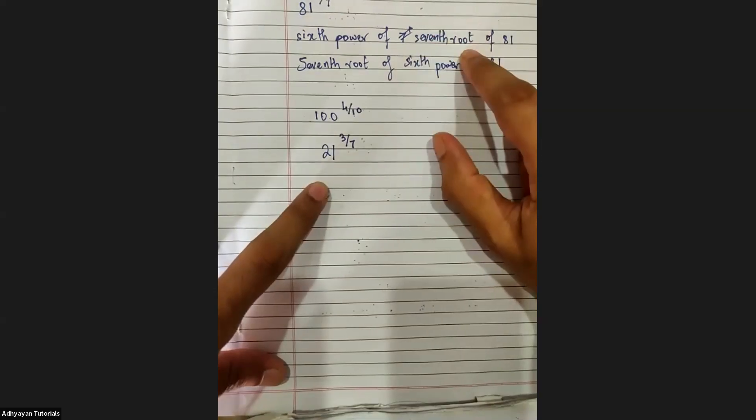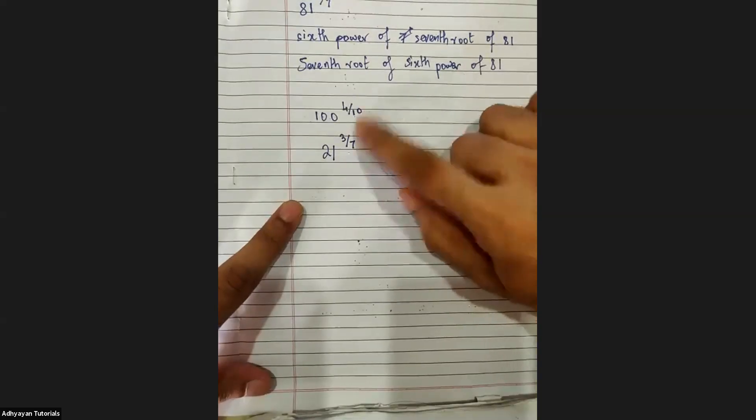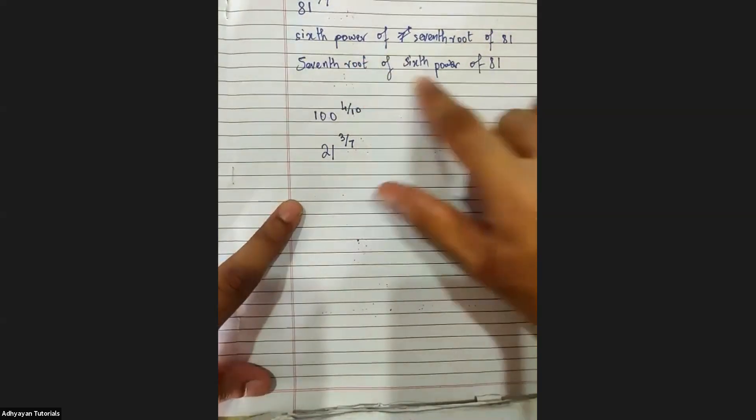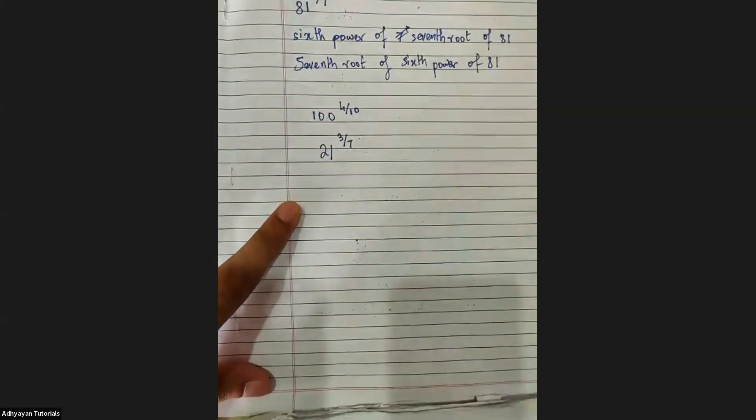Third power of seventh root of twenty-one. Now tell me root of the power first: seventh root of third power of twenty-one. Now you understood?